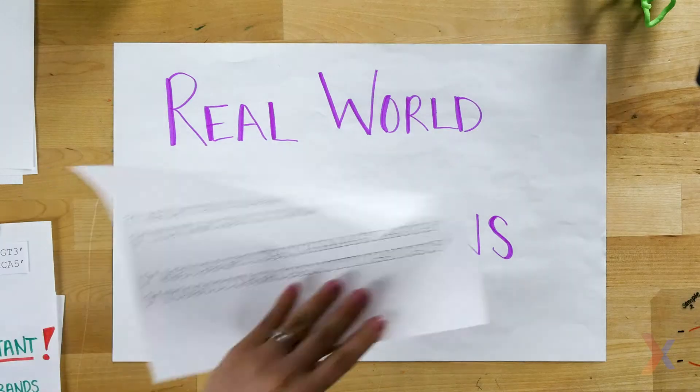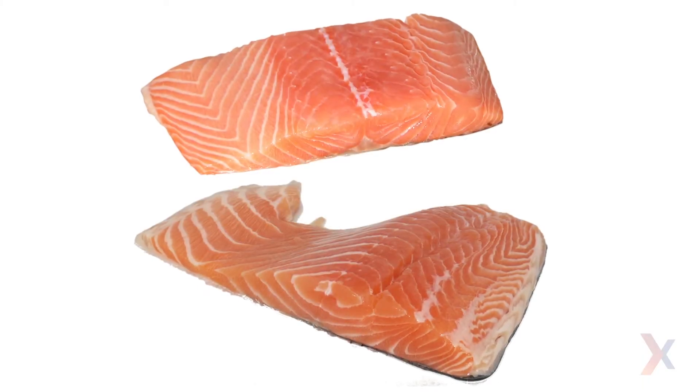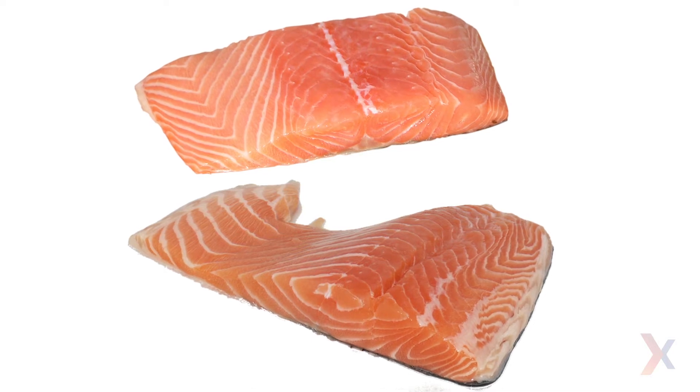One way you can use gel electrophoresis is to tell differences in DNA sequence. This can help you tell if you are at risk for a particular genetic disease. Another application is identification, to find out if the salmon you're actually buying is salmon or if your ginseng powder is actually ginseng powder.